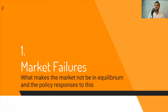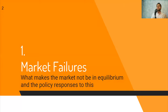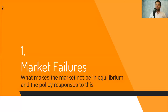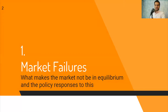We started last class with this idea about market failures. Essentially, a market failure is a situation in which the market equilibrium ends up with a very inefficient result. Therefore, that result should be addressed with a policy response. There are different policy responses that have different consequences on the market and on different agents from the market.